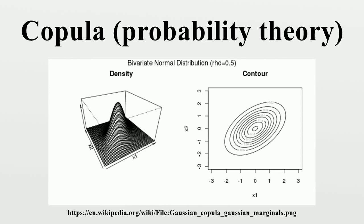In probability theory and statistics, a copula is a multivariate probability distribution for which the marginal probability distribution of each variable is uniform. Copulas are used to describe the dependence between random variables. Their name comes from the Latin for 'link' or 'tie',